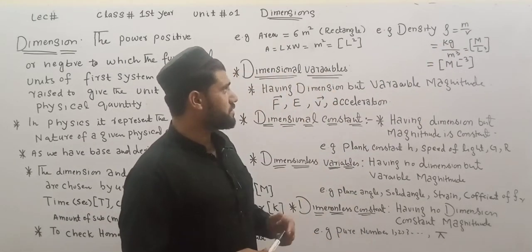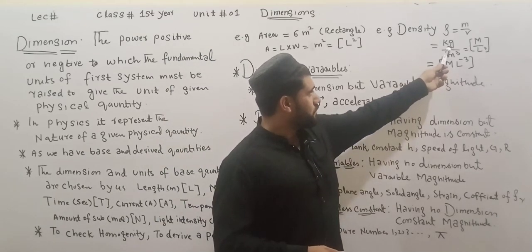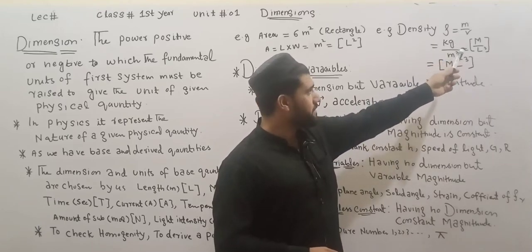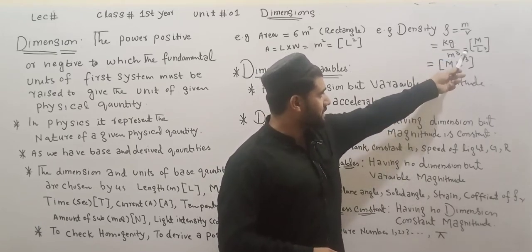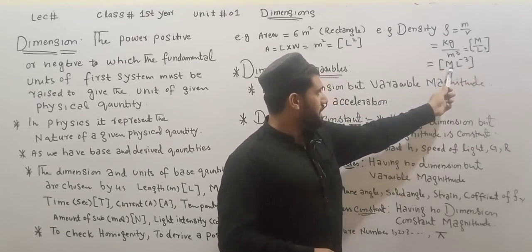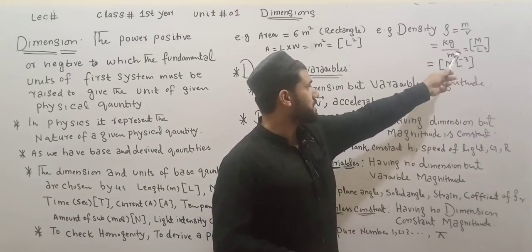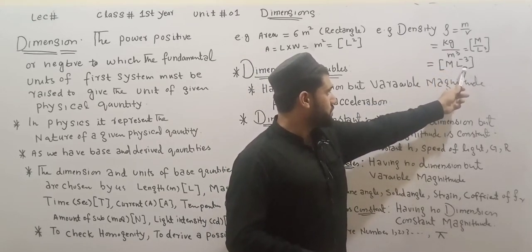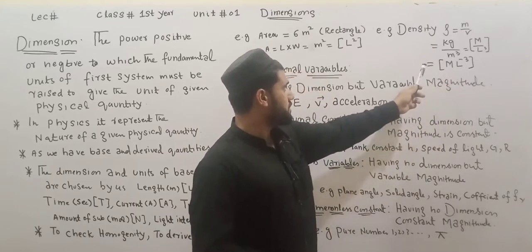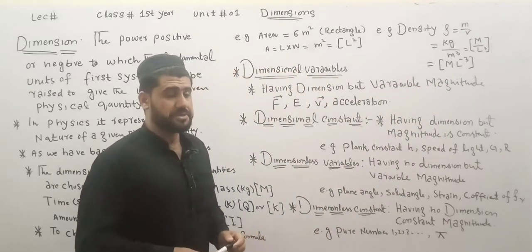For example, the mass is in kilograms and the volume is in meter cube. The kilogram means the mass dimension is M, and the meter cube is a length dimension L cubed. So density is M divided by L cubed, which gives M L to the power of minus 3. That is the dimension of density.